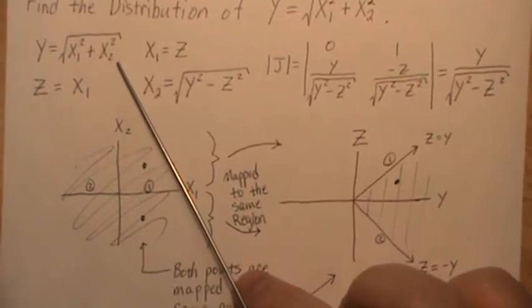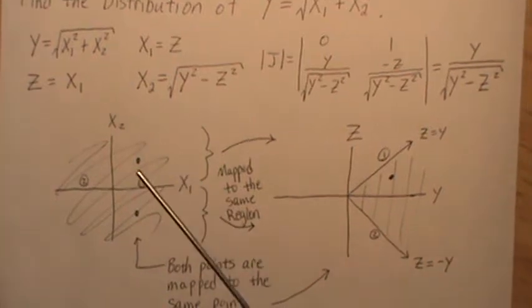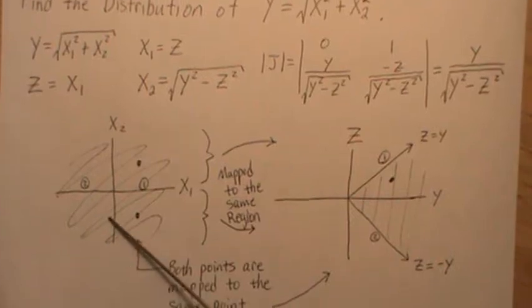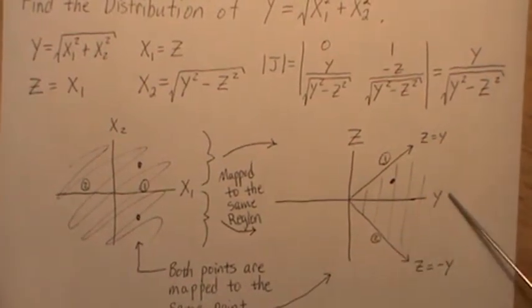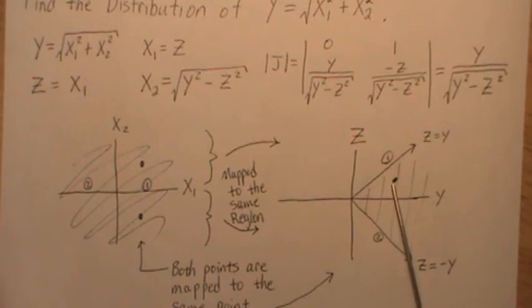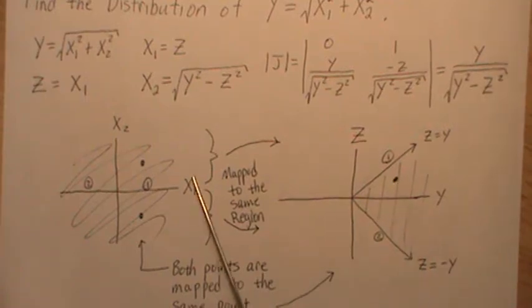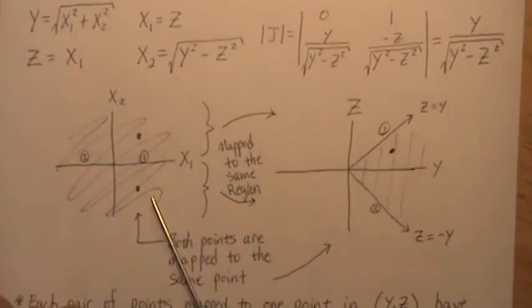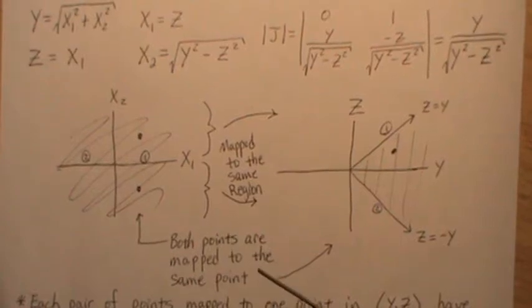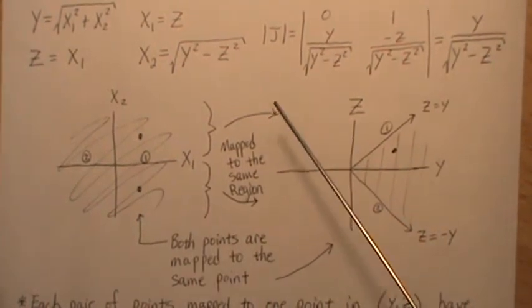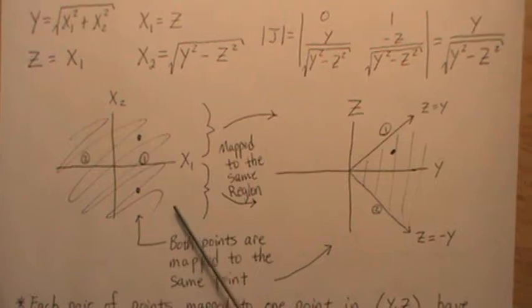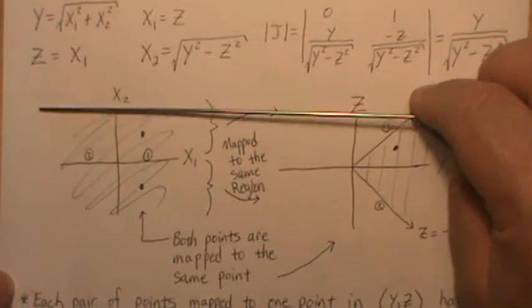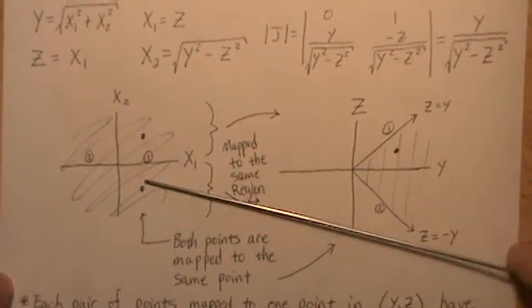But now the crazy thing is, since x2 squared takes any positive or negative and makes it the same value, any value in here is mapped to the same region. So if we look at this point, we don't know if it came from this point or this point. So the regions aren't one-to-one and onto. You can't go back and forth and know where it came from. So we have to treat these regions separately. So we'll treat this region separately, and then we have to treat this region separately.